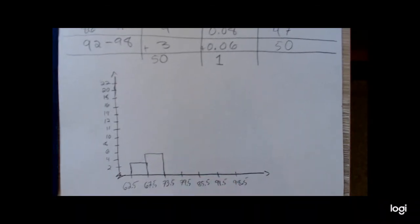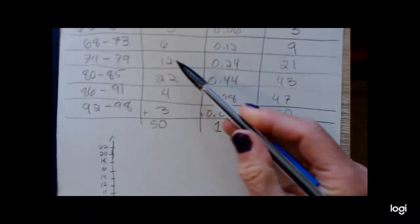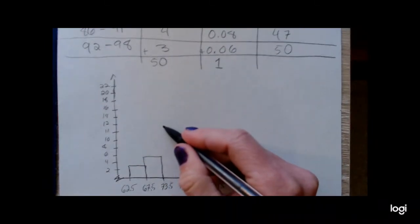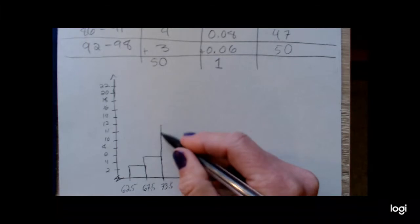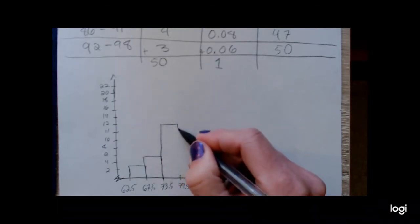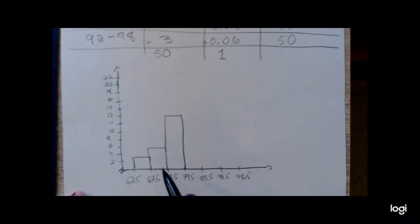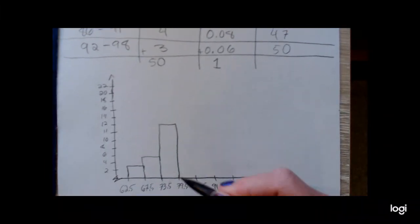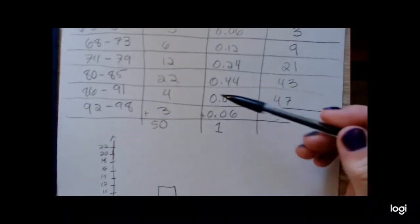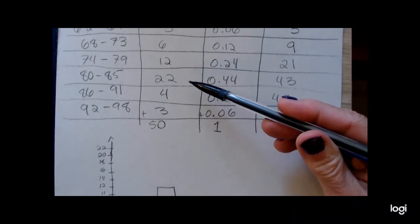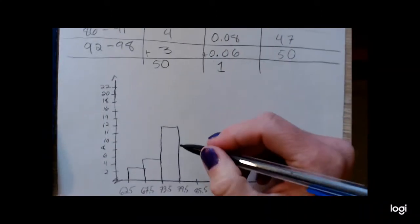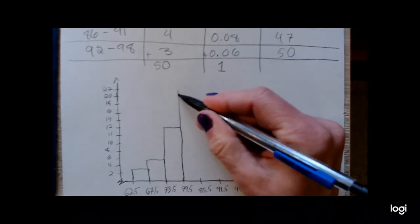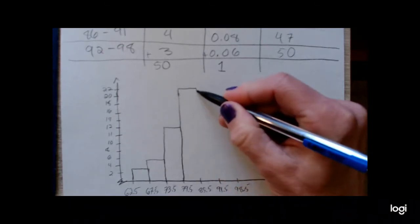The next class had 12 frequencies, so I'm going to make that bar a height of 12. And notice when I'm doing this, the bars are touching. There's no gaps between the bars. The next class is that tall bar, the tallest one of the group, so I'm going to make it 22 units tall.